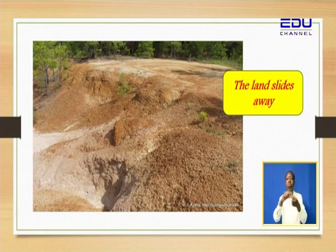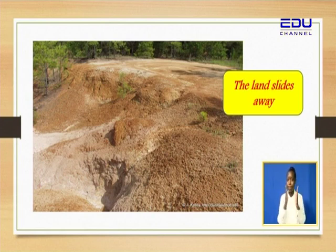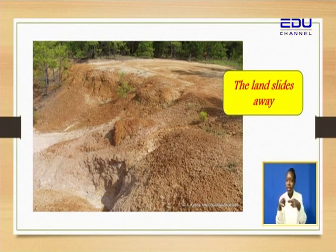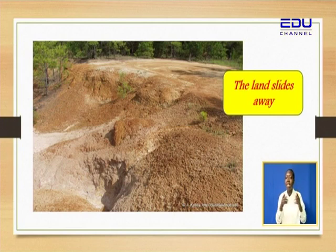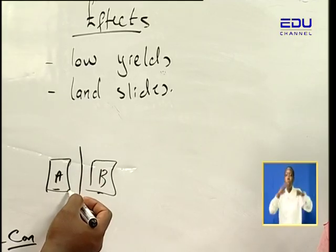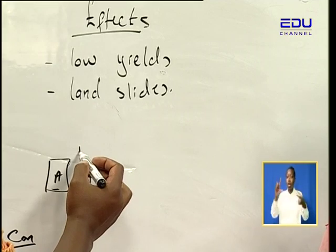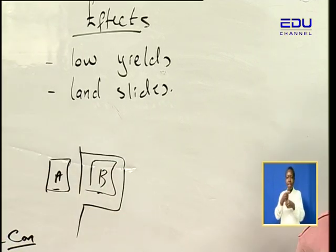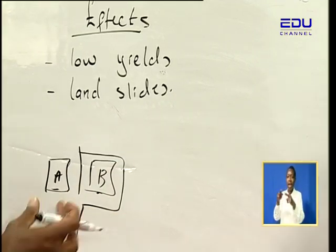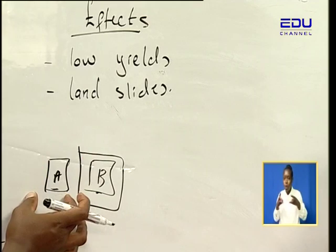Remember the story of Person A and Person B — there was a river between them. Person A knew how to cultivate, but Person B didn't. So Person B's land slid away, came and joined with Person A's side, making the river change its channel.